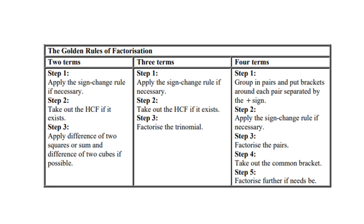The golden rules of factorization: for two terms — apply the sign change rule if necessary, take out the HCF if it exists, then apply difference of two squares or sum and difference of two cubes. For three terms — apply sign change if necessary, take out HCF, then factorize the trinomial. For four terms — group them in pairs with brackets separated by a plus sign, apply the sign change rule if necessary, factorize the pairs, take out the common bracket, and factorize further if needed.